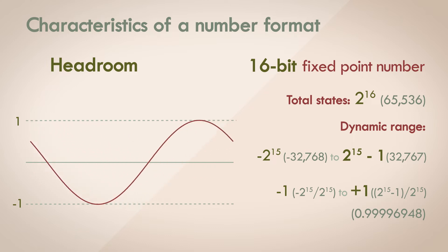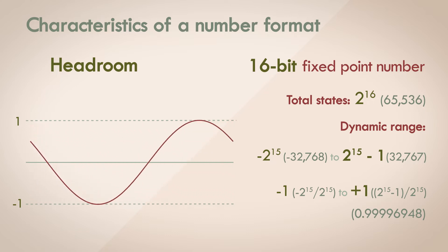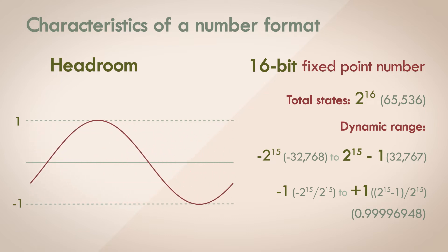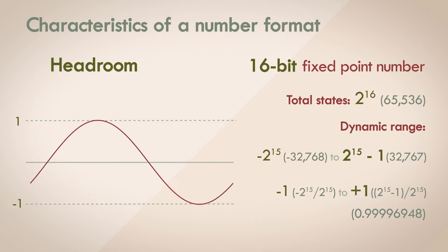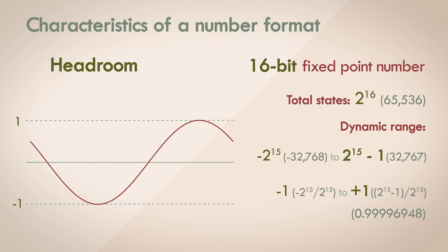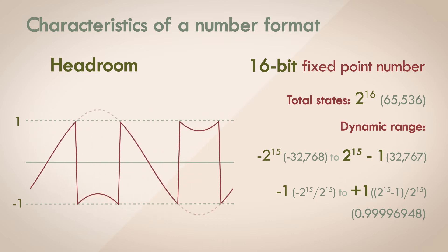So we're saying the nominal value for audio is between negative 1 to 1. To find the headroom that's available, we need to find out what happens when the audio signal exceeds this range. Well, there's no more space available beyond the range — as soon as the signal dips below negative 1 or beyond 1, an overflow occurs.